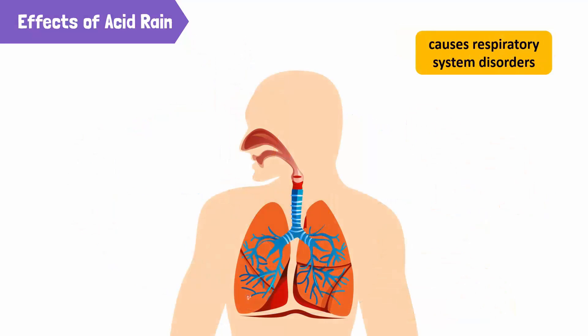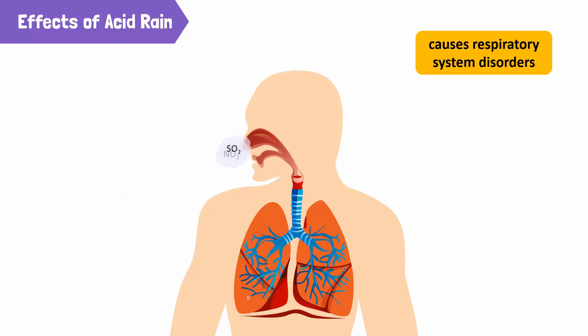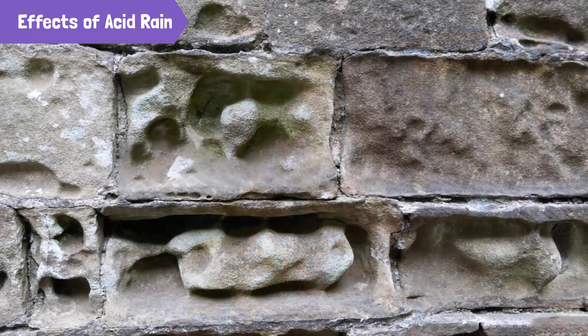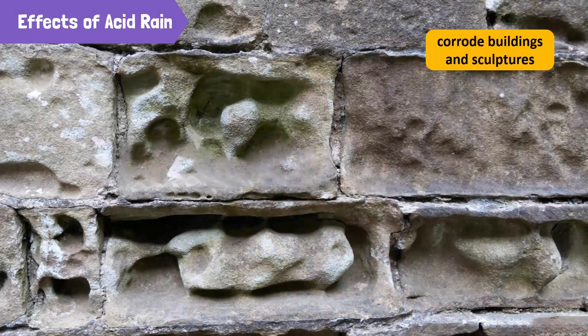Acid rain also has effects on human health. Our lungs can be harmed by the oxides of sulfur and nitrogen, resulting in respiratory system disorders. Acid rain also has a corrosive effect on marble buildings and sculptures.